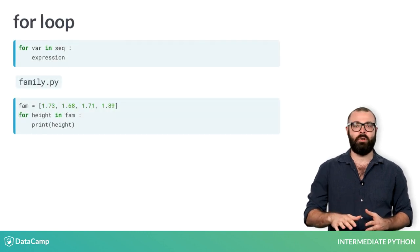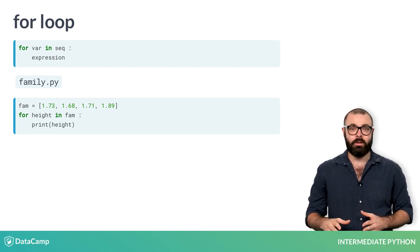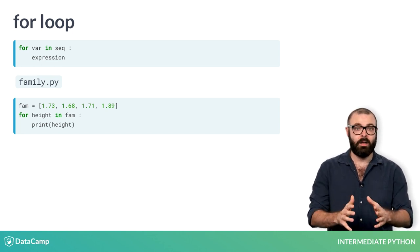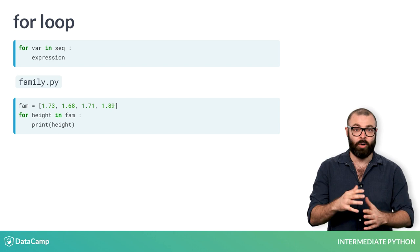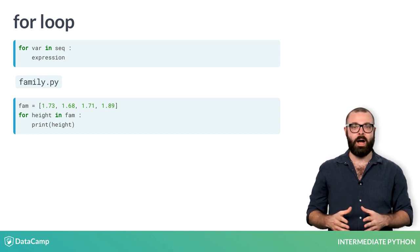Let's wipe the print calls and start a for loop. For height in fam, followed by a colon, this means that I want to execute some code for each height in the fam list. Height is an arbitrary name here. I could just as well call it h or something else. Inside the for loop, on every iteration, I print out the value of height.